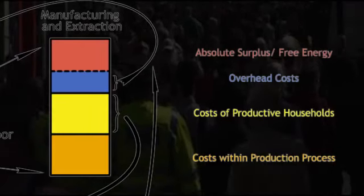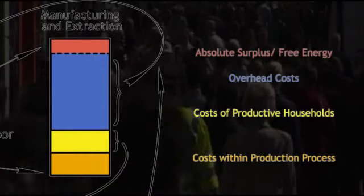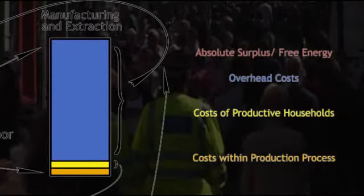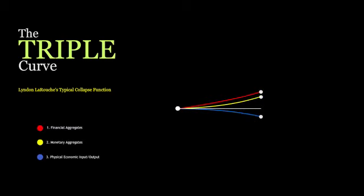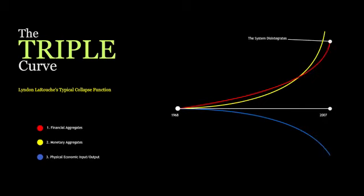A disproportionate layer of the population of the advanced nation assimilates into the service economy and massive debts accrue as the real income level of society collapses. The rate of depreciation of physical society coincides with the rate of accumulation of debt and fictitious financial values, leading to a hyperinflationary breakdown. What appears to be a decrease in cost is actually a swindle.